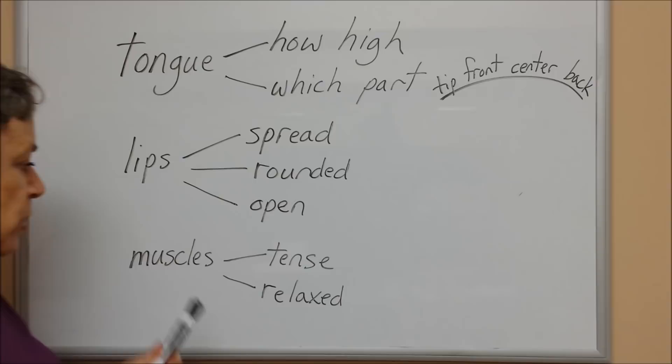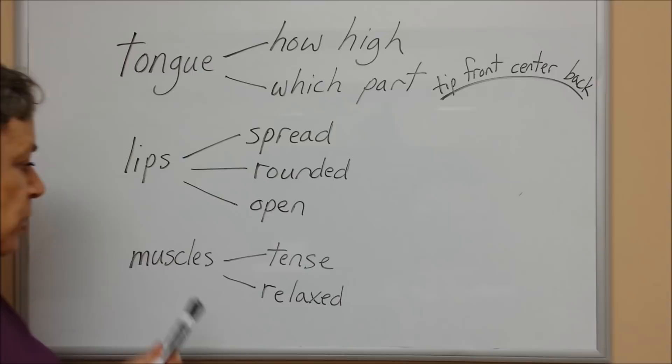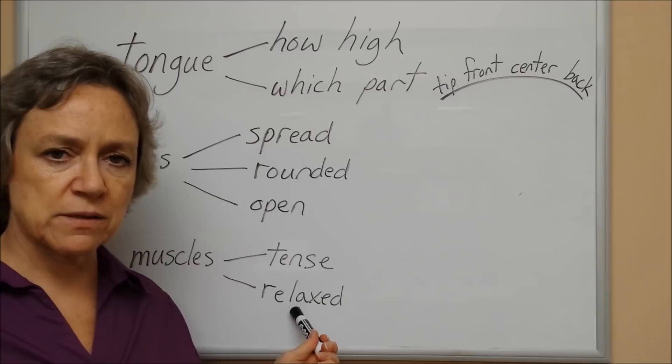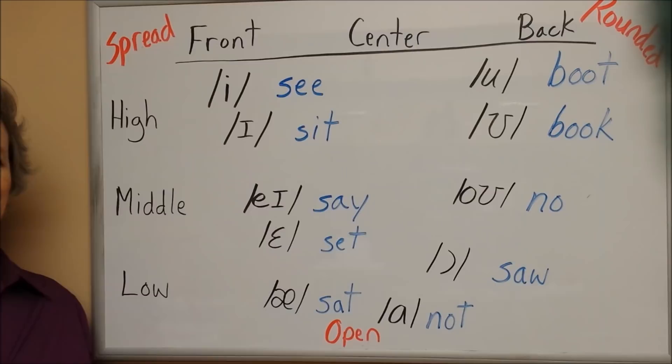We should also be aware of our muscles — are they tense or relaxed? If they're tense, that means they're tight in my mouth; if not, they are relaxed. So when we talk about vowels, we should be aware of these things. Here's a vowel chart — it looks a little messy, but I'll try to explain it.